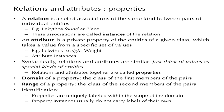An attribute is a private property of the entities of a given class, and this property takes a value from a specific set of values. So 'Lekithos weighs weight' is a statement of a property of Lekithos, and once we consider any specific Lekithos, we can record the value of its weight — say, one and a half kilos. When we consider particular entities and the value they have for a particular attribute, we talk of attribute instances. We say that the attribute is instantiated and we have the instance of the attribute.